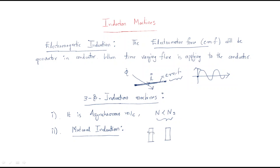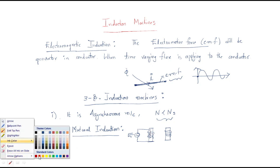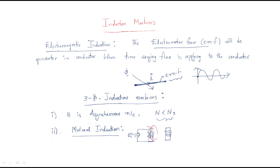What is mutual induction? We have two coils. If you give supply to the first coil, the EMF will be generated and flux will be produced. Some of that flux will be linked with the second coil, and the linking of the flux will produce EMF in the secondary coil. Whenever supply is given to the first coil and EMF is generated in the second coil, this is known as mutual induction.